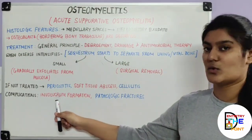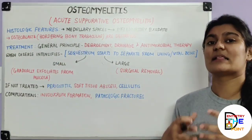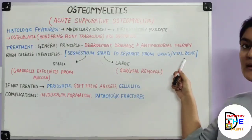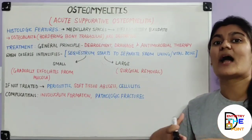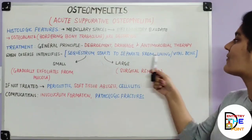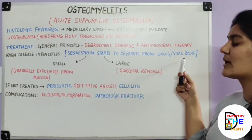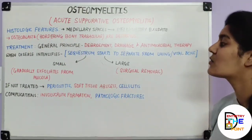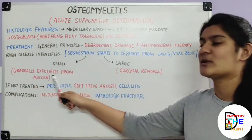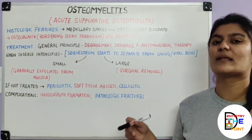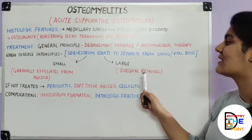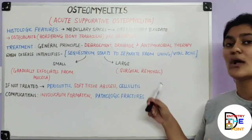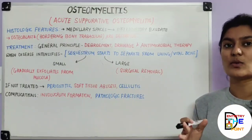Disease intensification occurs when the sequestrum starts to separate from the living or vital bone. If the sequestrum is small, it gradually exfoliates through the mucosa. If it is large, it requires surgical removal because the bone resorption process is very slow.